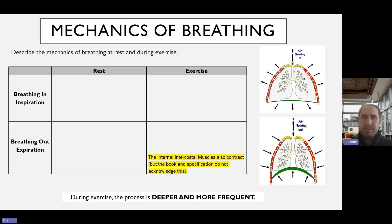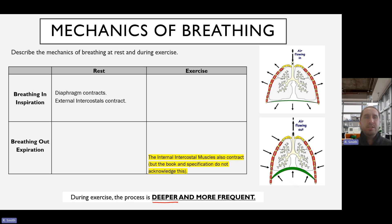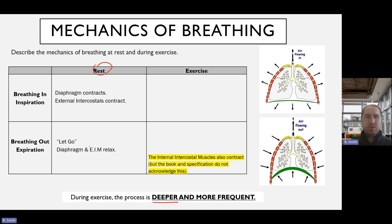In terms of the mechanics, the big thing to understand is that when we are exercising, the process is deeper. We're breathing deeper because we need to get more oxygen into the body, taking more air in and more frequently. The spirometer trace gets bigger and we're eating into our inspiratory and expiratory reserve volumes. At rest, the diaphragm contracts or flattens and the external intercostal muscles contract. When breathing out at rest, it's like letting go of a balloon — the diaphragm relaxes and so do the external intercostal muscles. On most exam answers you'll see intercostal muscles, but to be specific, it's the external intercostals.